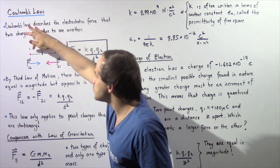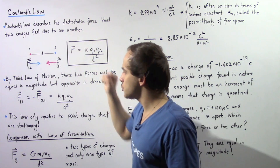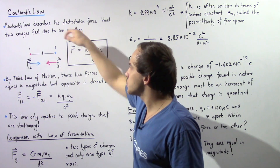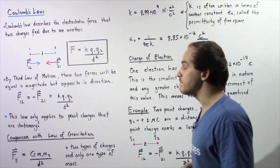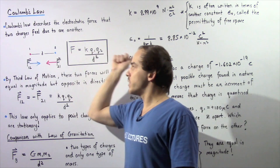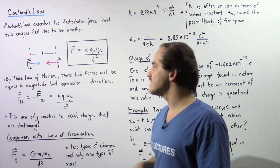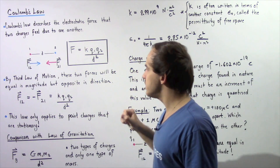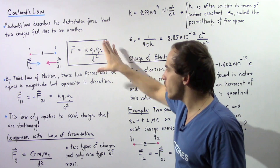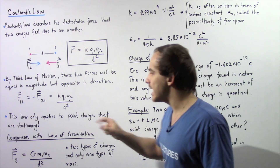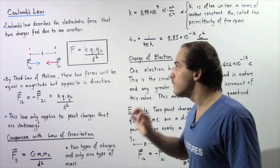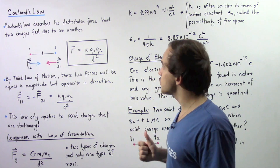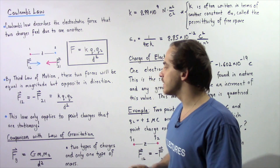The force that point charge 1 feels as a result of point charge 2 is equal to the negative of the force that point charge 2 feels due to point charge 1. We assume going one way is positive and the other way along the x-axis is negative. The magnitude of these two forces will be the same. This law only applies for point charges that are stationary, and the force in such a case is known as an electrostatic force.